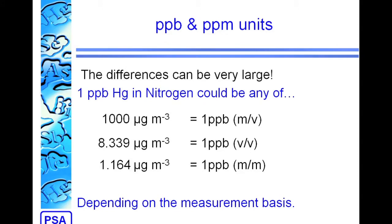For those three numbers, we end up with 1,000 micrograms per cubic meter is 1 PPB on a mass-volume basis, 8.3 micrograms per cubic meter is 1 PPB volume, and 1.2 micrograms per cubic meter is 1 PPB mass.